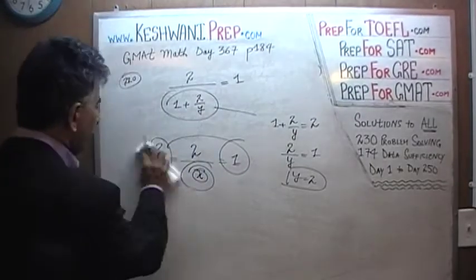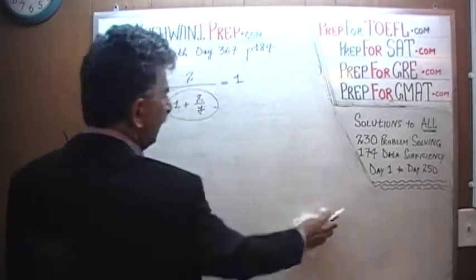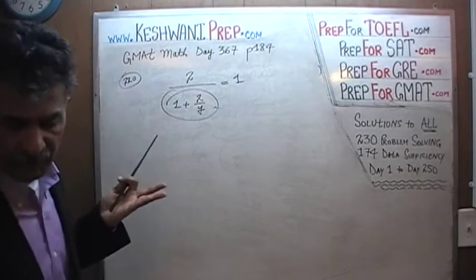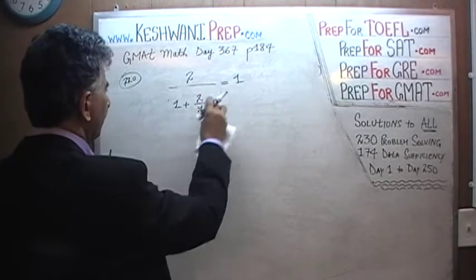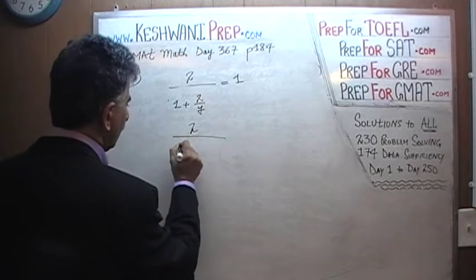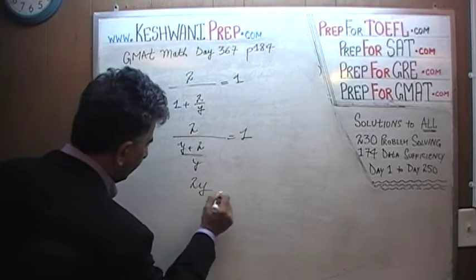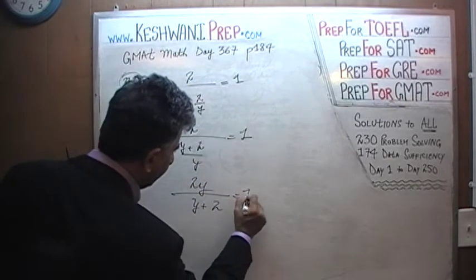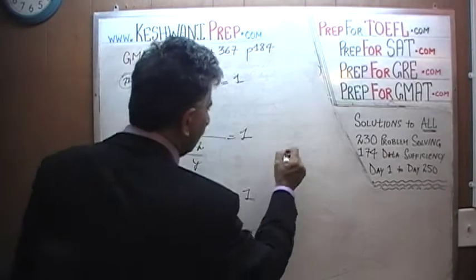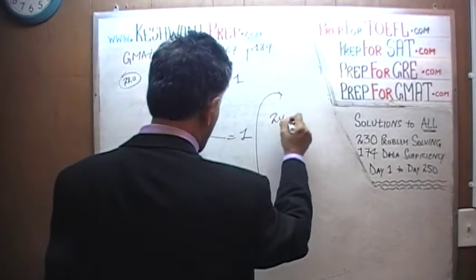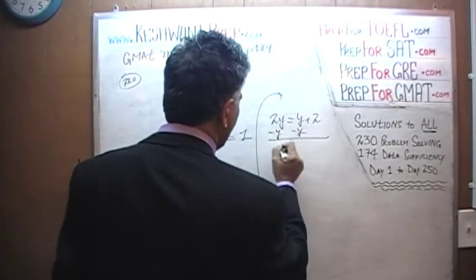You could also do it in a more traditional, classical, orthodox way, going through the entire process, though it's a bit of a waste of time. That approach is to find a common denominator: you get 2y over y plus 2 equals 1, which is the same as 2y equals y plus 2. Subtracting y from both sides, we end up with y equals 2. Either way, it's a very straightforward problem.